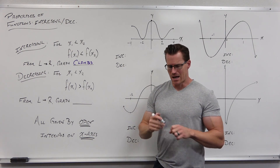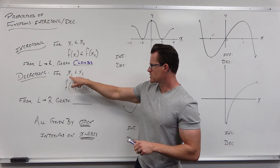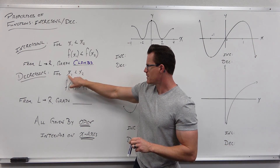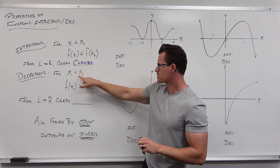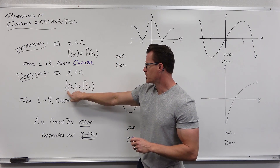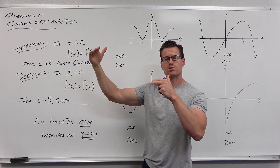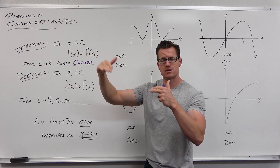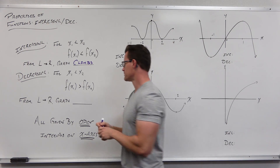For decreasing, the opposite happens. Look at your x values. If you have an x value that is getting larger as you move from left to right, then your output will be getting smaller, and that would create a graph that is falling as you move from left to right.